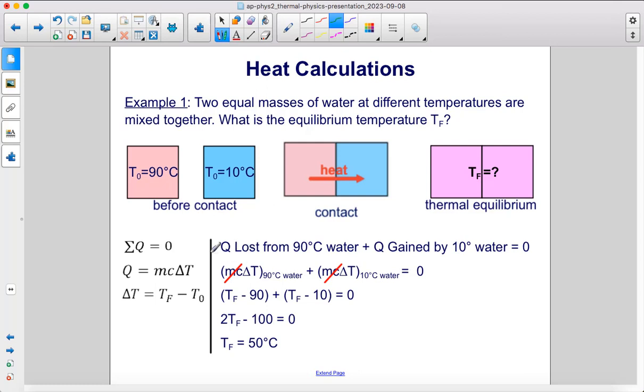All right, so we have the heat lost from the 90 degrees Celsius water plus the heat gained by the 10 degrees Celsius water. Well, that's going to add up to zero, right? The heat lost from this one is going to be gained by the other. So they're going to be equal to each other, but one will be the negative. So we have mcΔT for the hot water plus mcΔT for the cold water equal to zero.